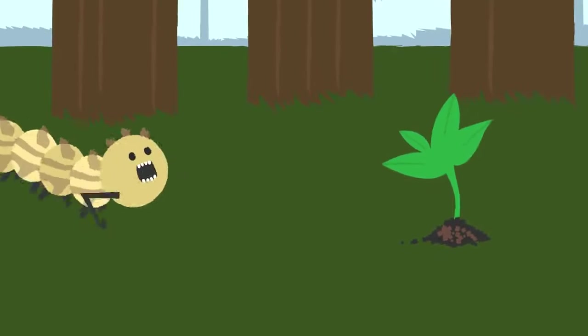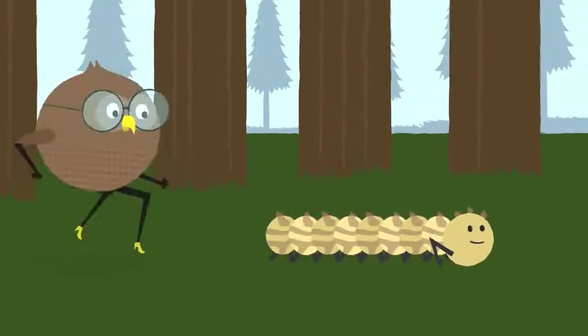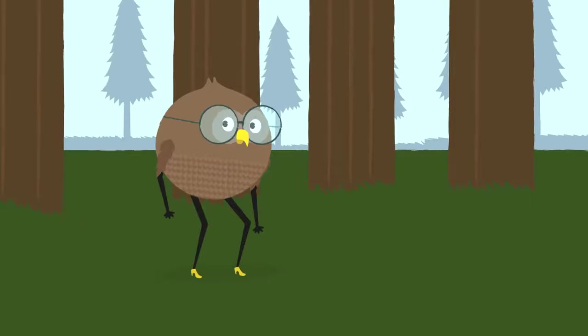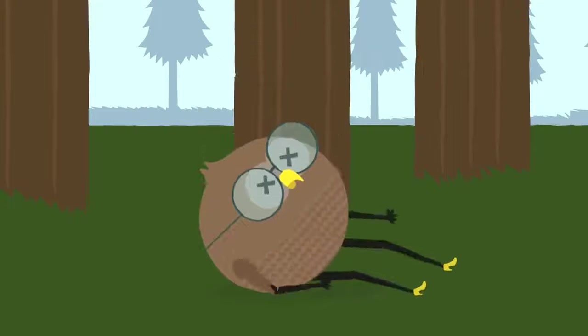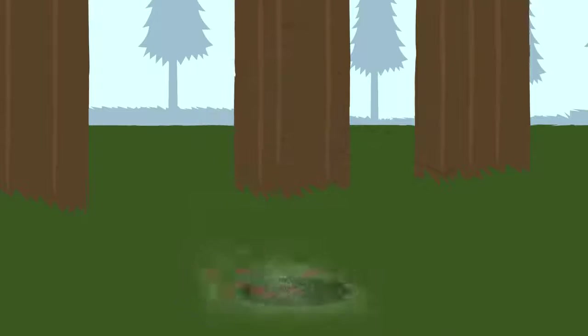One species waste is another's food, energy is provided by the sun, things grow, then die, and nutrients return to the soil safely. And it works.